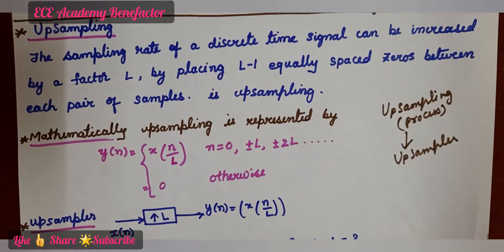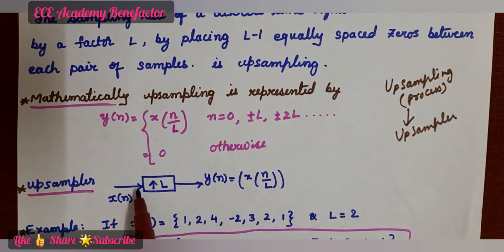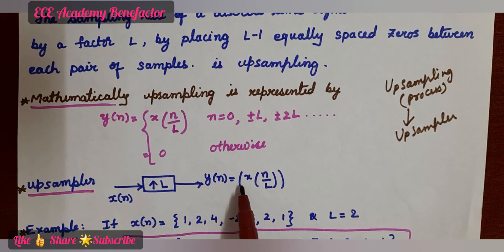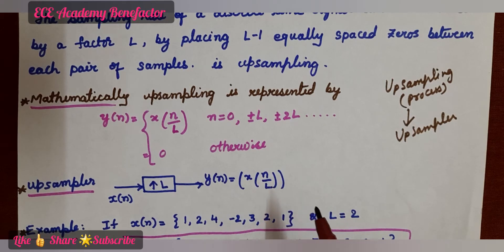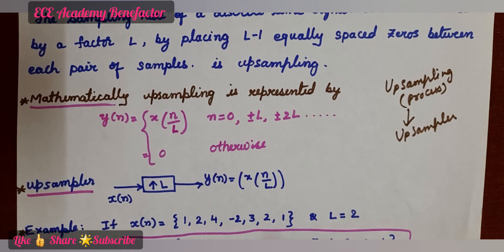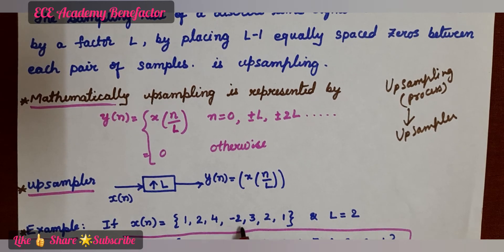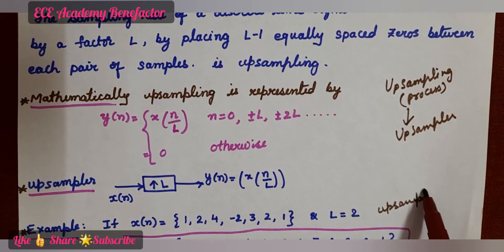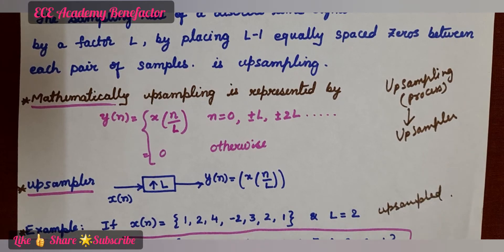What is the diagram of the upsampler? The input x of n is given to a system where the sampling rate is increased by a factor L, to get the output y of n. y of n is equal to x of n over L. So this is an upsampler. Let us see one example. If x of n equals 1, 2, 4, minus 2, 3, 2, 1, and it is upsampled by a factor of 2, what will be the output signal?